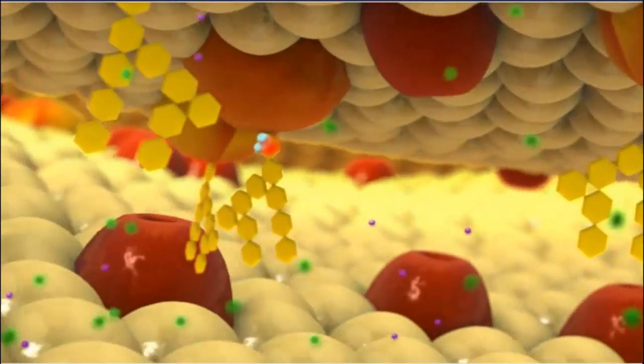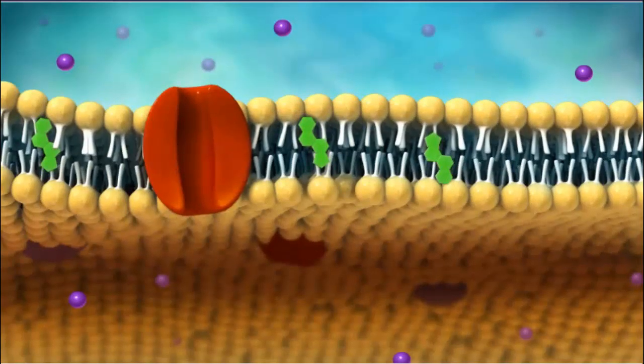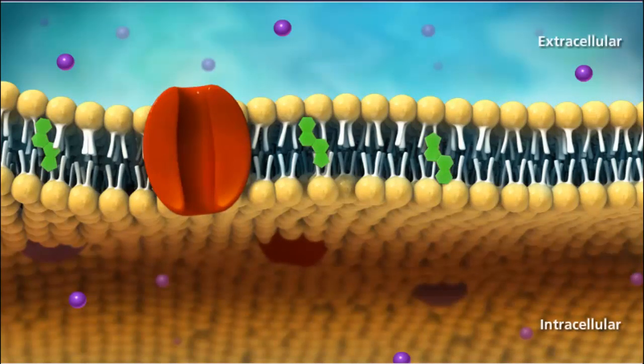These materials move in and out of cells by passing through the plasma membrane of the cell. The plasma membrane surrounds the cell and separates the interior of the cell from its environment.